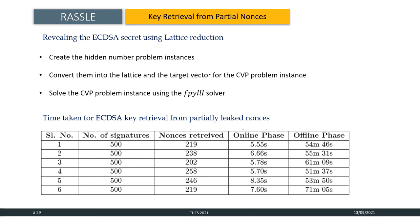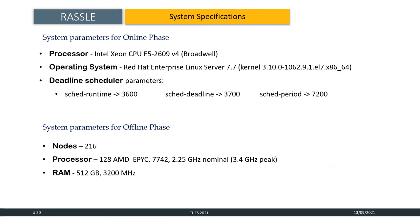For our attack, we use the following system. For the online phase, we use the system with the processor having Intel Xeon CPU E5-2609v4. It has a by default deadline scheduler in it and the operating system was Red Hat Linux server 7.7 with kernel 3.10. The deadline scheduler parameter that we set was the sched_runtime as 3600, sched_deadline as 3700, sched_period as 7200. For the offline phase, more specifically for the lattice reduction part, we used a cluster having 260 nodes where each node had 128 AMD EPYC 7742 processors with 2.25 GHz nominal and 3.4 GHz peak clock speed and a RAM of 512 GB of 3200 MHz.